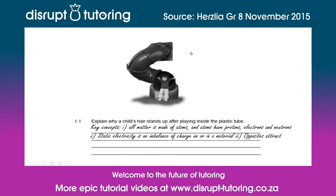Opposite charges attract — positive and negative charges attract — and it follows that like charges repel. Now that we know this, we can answer the question: the friction caused between the two bodies rubbing against each other, that is the child and the slide as the child is sliding down the tube, causes the transfer of electrons between the two bodies.